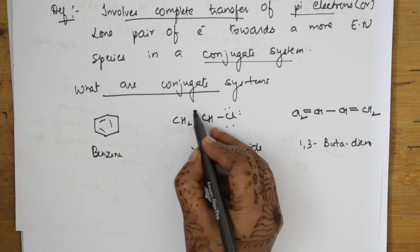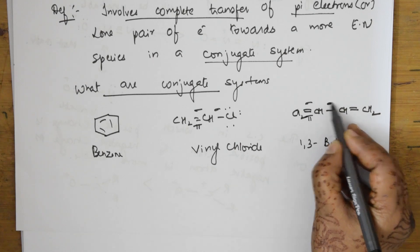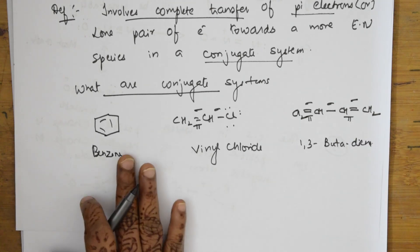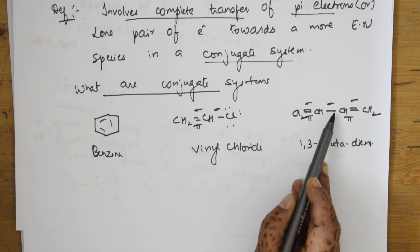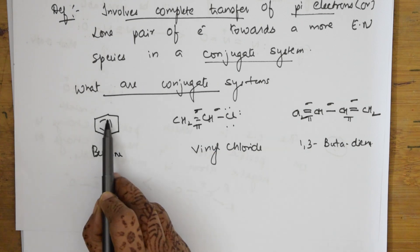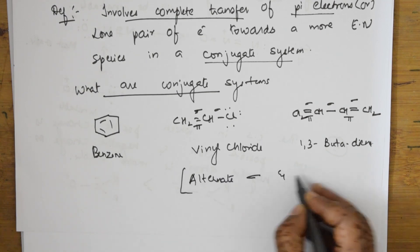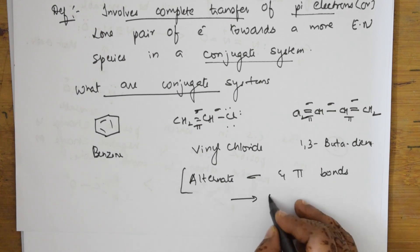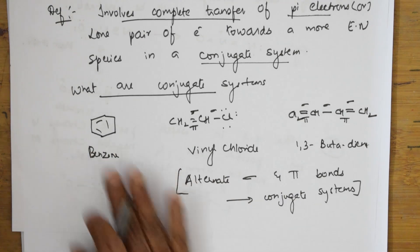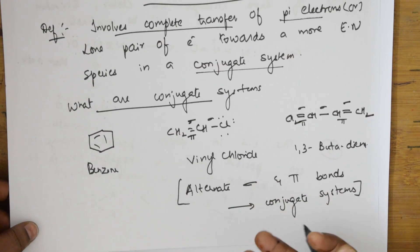In these structures, you can observe alternate sigma bonds and pi bonds — sigma bond, then pi bond, then sigma bond, then pi bond. Wherever there is an alternating sigma and pi bond arrangement, such systems are called conjugate systems. So benzene, vinyl chloride, and 1,3-butadiene are all examples of conjugate systems.